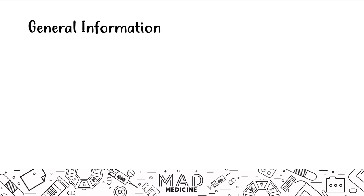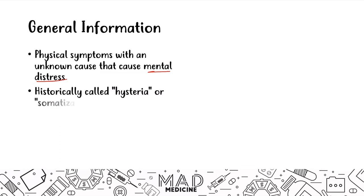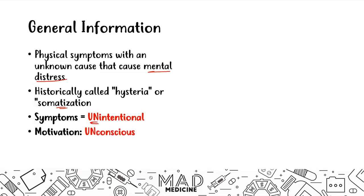In these somatic and related disorders, the main thing to understand is that physical symptoms are going to be present due to an unknown cause, and usually these physical symptoms lead to mental distress. That's one of the main key giveaways. Now, historically, these have been called hysteria or somatization. One thing to understand is that the symptoms are going to be unintentional, and the motivation itself is also going to be unconscious.